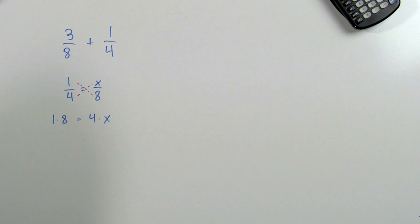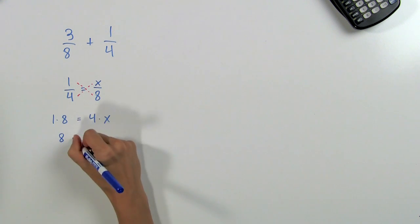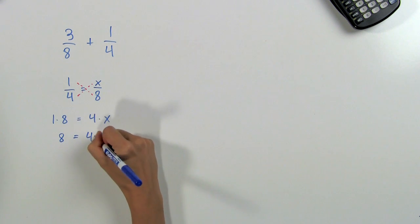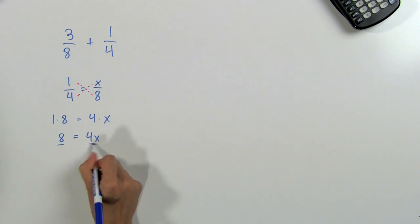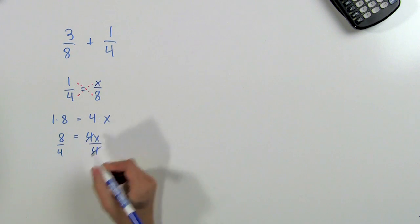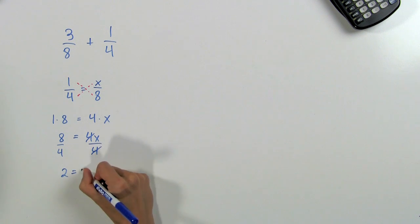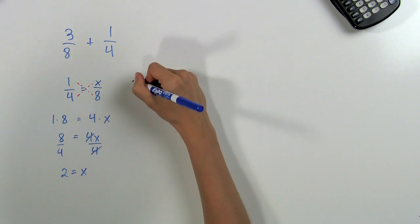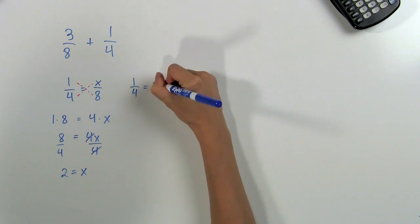Now we can solve for x. 1 times 8 is 8, and 4 times x is 4x. We divide both sides by 4, and the 4s cancel out, and we get 2 is equal to x. So now we know that x is 2, and therefore 1 fourth is equal to 2 eighths.